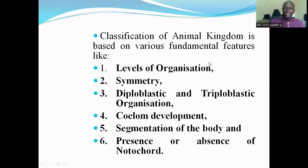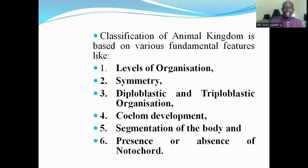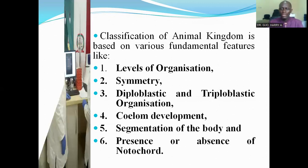Classification of the animal kingdom is based on various fundamental features. These fundamental features are: one, the levels of organization; the symmetry; the diploblastic and triploblastic organization; coelom development; segmentation of the body; and the sixth one, presence or absence of notochord. So these are the various fundamental features that are used to classify animals into various groups.